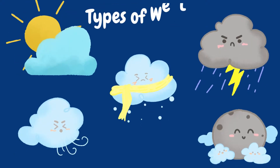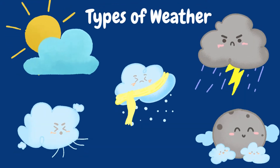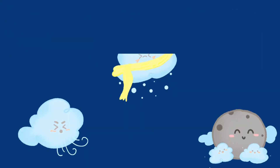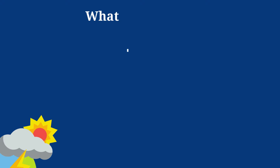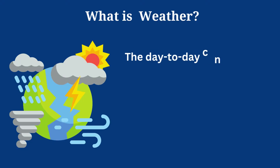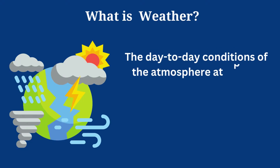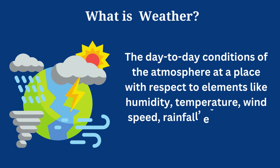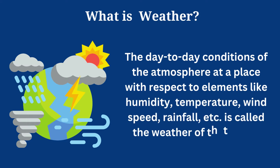Hello kids, today we will learn about types of weather. What is weather? The day-to-day conditions of the atmosphere at a place with respect to elements like humidity, temperature, wind speed, rainfall, etc., is called the weather of that place.